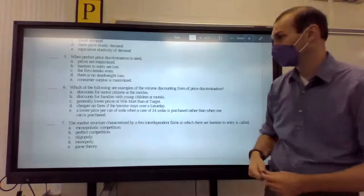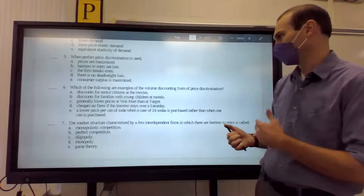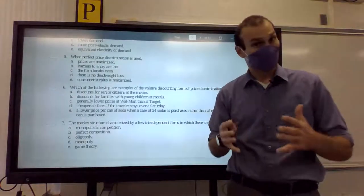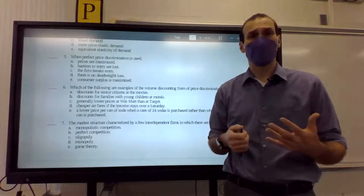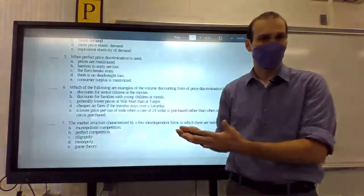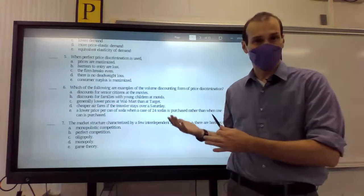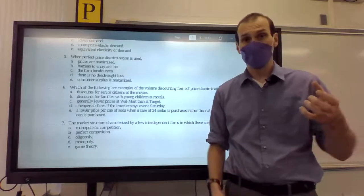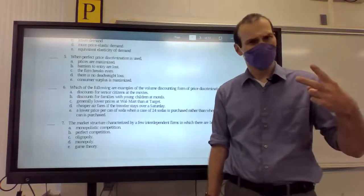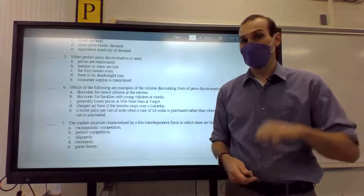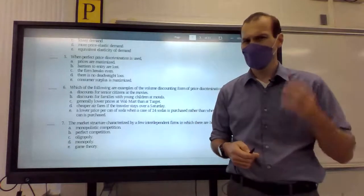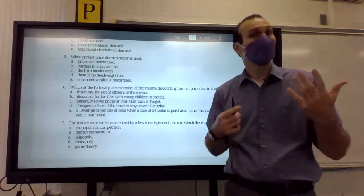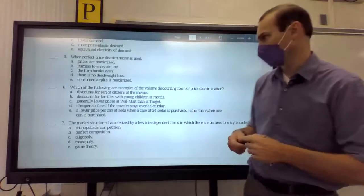So the first one we'll be covering is number six. Number six says, which of the following are examples of volume discounting forms of price discrimination? Volume discount is pretty rare. It's not something that's super crucial for class, but essentially it's when you buy in bulk, I'll discount how many you buy. So which of these examples are people buying in bulk for a discount?